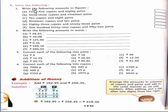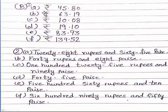Part b: solve the following. First question: write the following amount in figures. Part a: 45 rupees and 80 paise — firstly symbol use karenge, then write 45.80. Part b: 63 rupees and 19 paise — symbol use karenge rupees ka, then 63.19. Part c: 10 rupees and 80 paise — symbol use karenge, then 10.08.